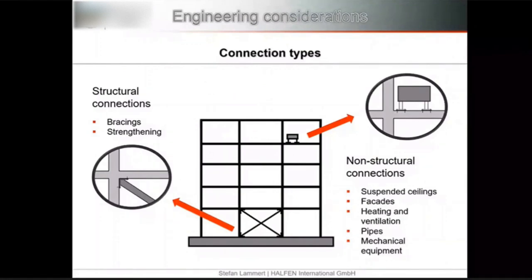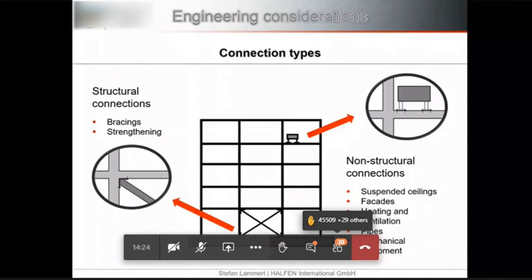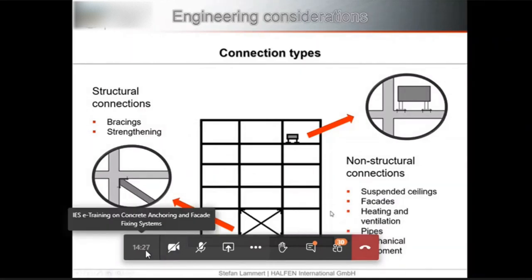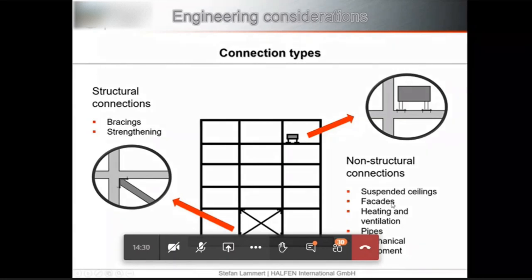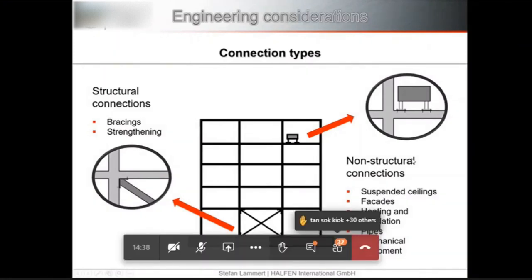Connections are divided into structural and non-structural categories. Structural connections are crucial to the stability of the construction — such as bracings and important load-bearing elements. Non-structural connections include suspended ceilings, facades, and M&E fixings — situations not relevant to the overall stability of a building.